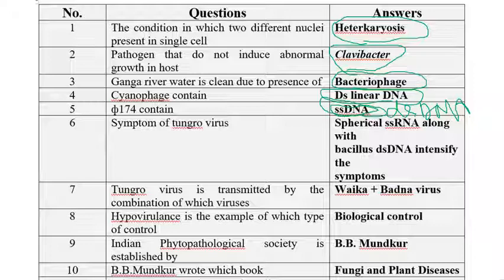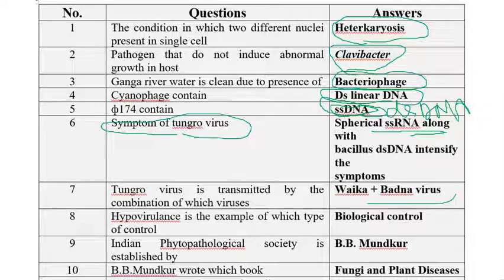Symptoms of Tungro virus: the spherical single-stranded RNA along with bacilliform double-stranded DNA causes the symptoms. Tungro virus contains two types of particles — spherical form virus and bacilliform virus. The next one: Tungro virus is transmitted by the combination of Waikavirus and Badnavirus.